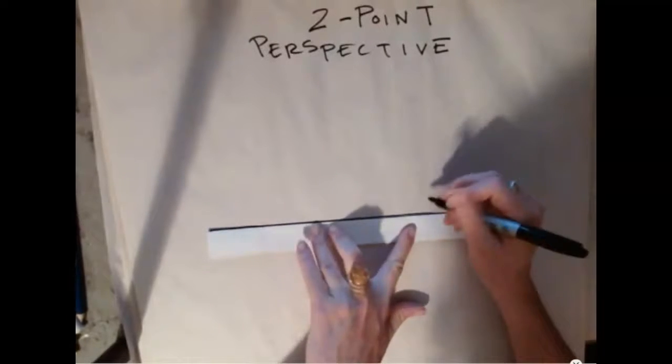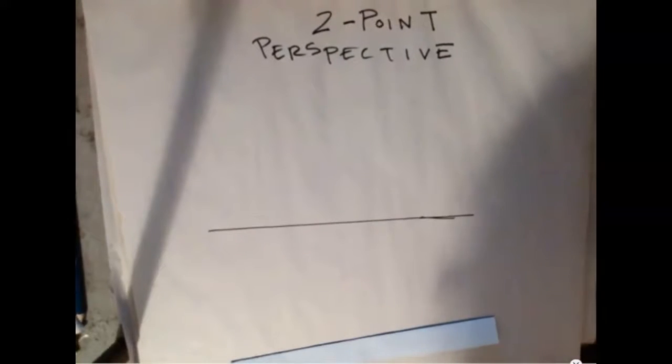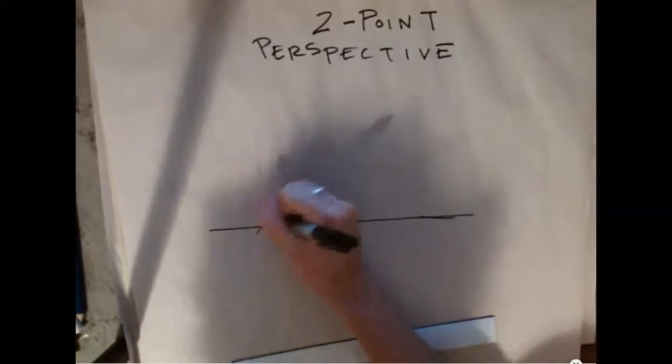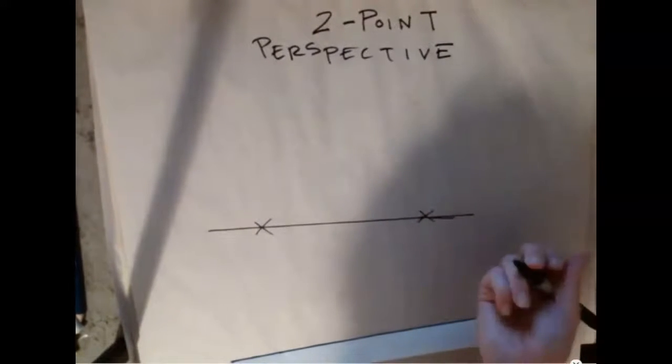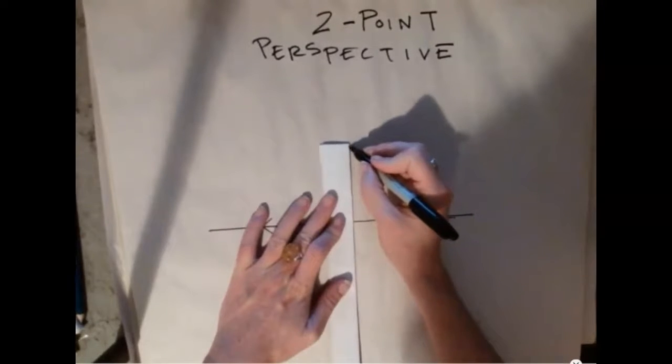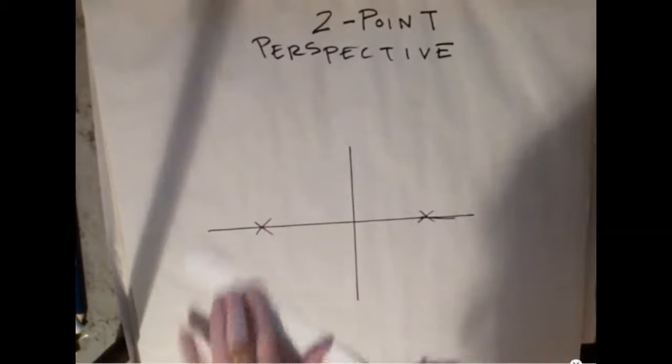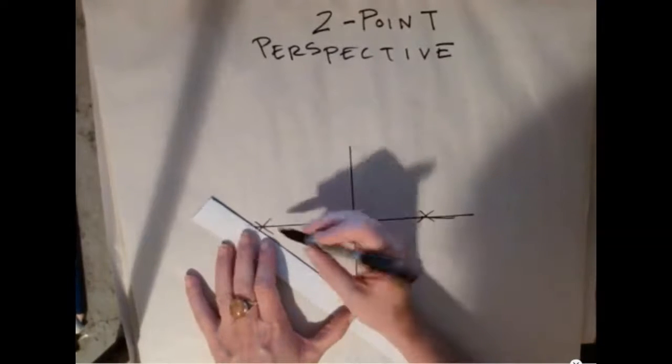This is where you have two vanishing points on your horizon line. So draw that horizon line and pick your two points. You want them to be pretty far apart. And then I'm going to show you what happens when you make your vertical line that goes above and below the horizon line.